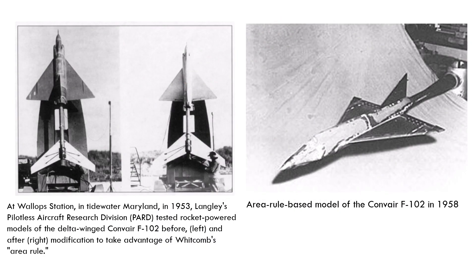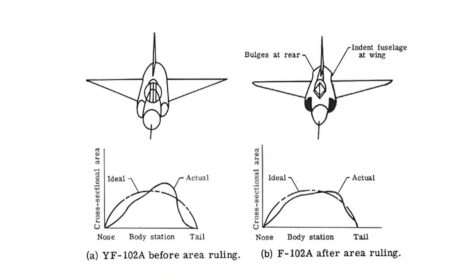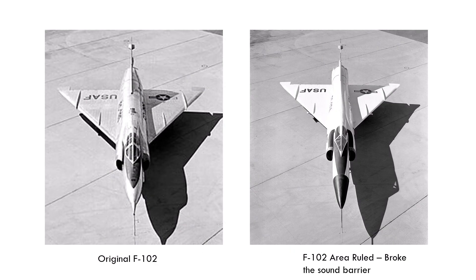Whitcomb's research marked a significant leap forward in understanding supersonic aerodynamics and had a direct impact on the design of the F-102 fighter jet. In response to his findings, Convair engineers promptly reworked the aircraft's fuselage, incorporating the area rule by shaping it with a narrowed, coke bottle or waisted section. This redesign, combined with an upgraded engine, enabled the F-102 to not only break the sound barrier with ease but also reach speeds exceeding Mach 1.5.